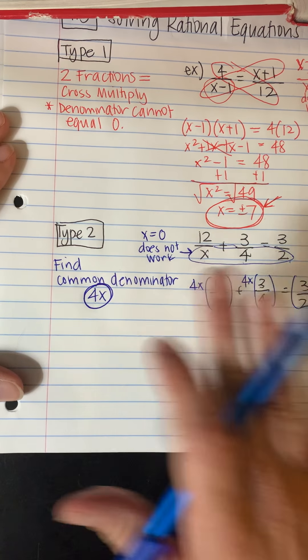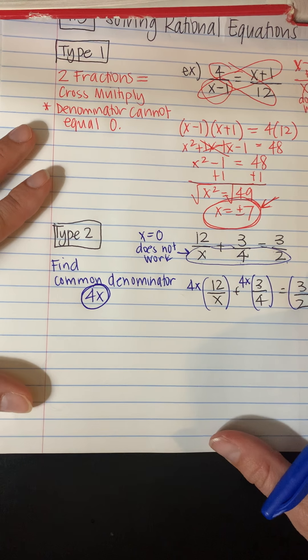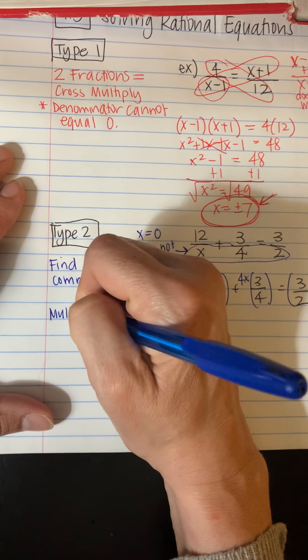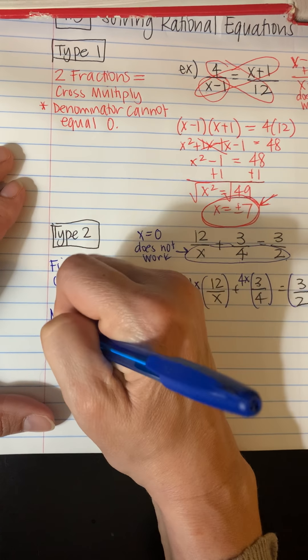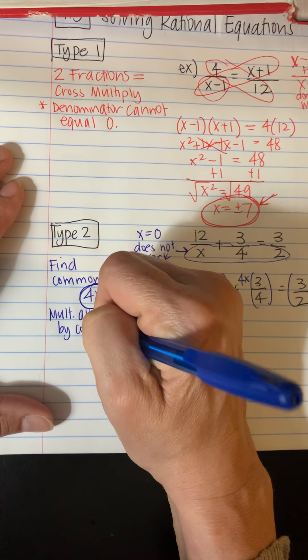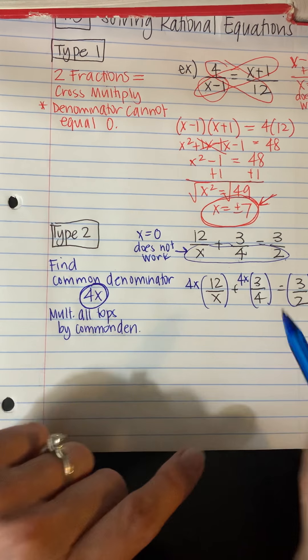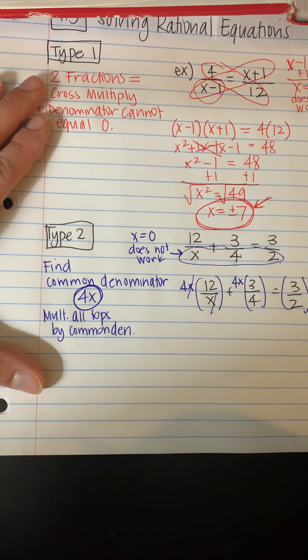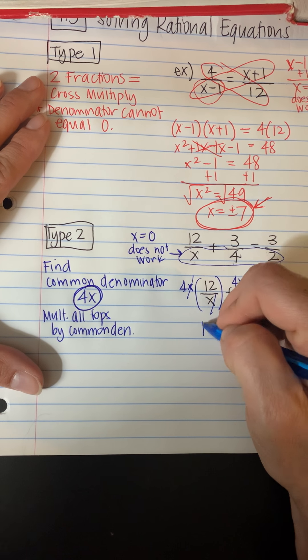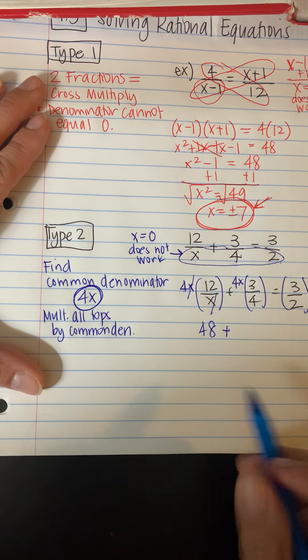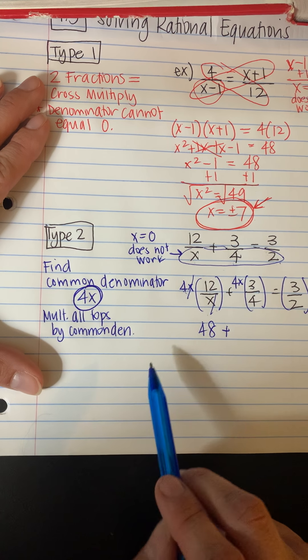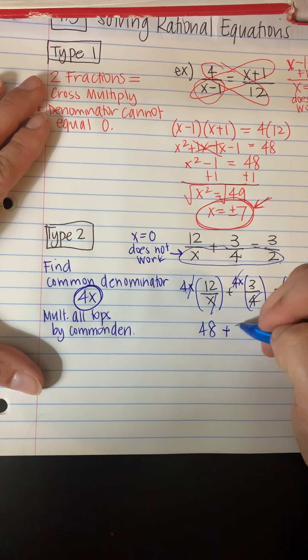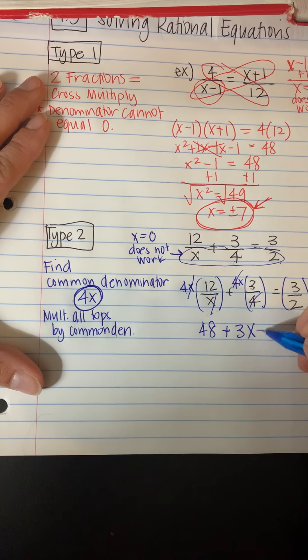Because if I multiply one side of the equation by 4x, I have to multiply the other. Now, why this is good. So we chose to multiply. You're going to multiply all the tops by the common denominator. So I'm multiplying all these by 4x. So these x's will cancel. So I get 4 times 12 is 48. So we see what happened there. That went away. There's no more fraction here. This one plus, these 4s will cancel. So I'll end up with 3x.